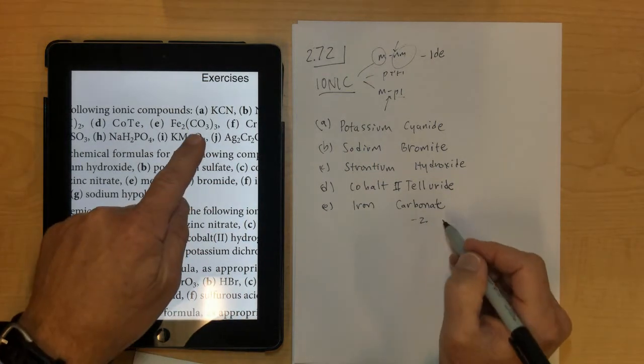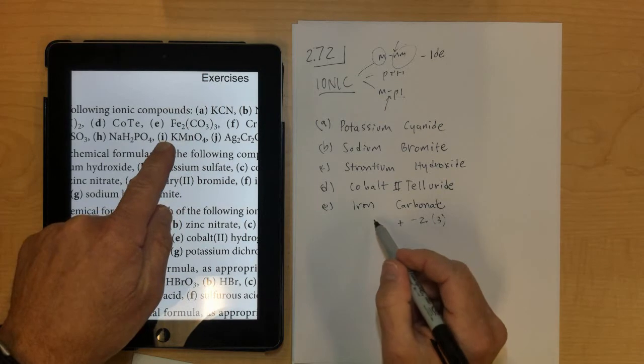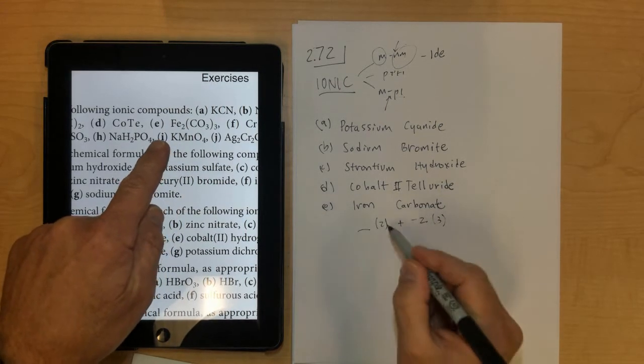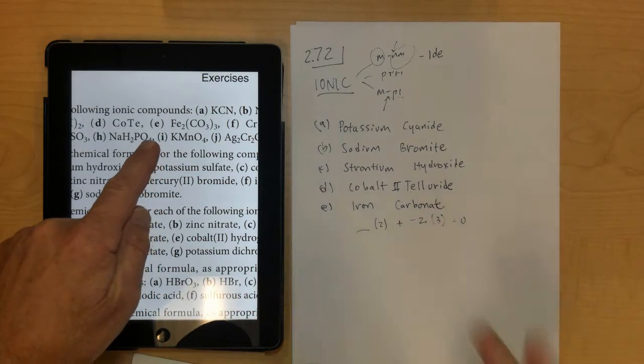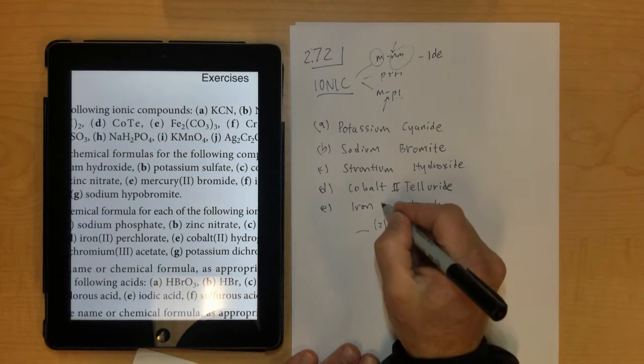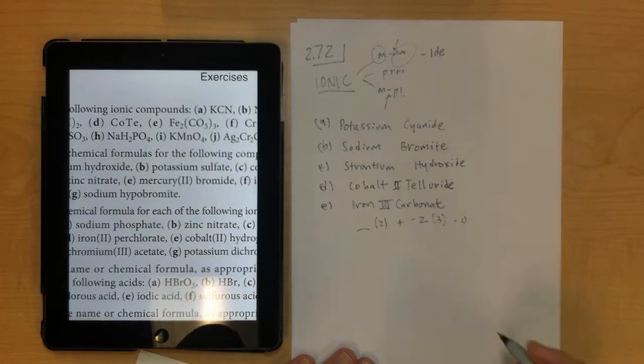You'll notice that there's 3 of those carbonates, and there's 2 of those iron, so something times 2 plus negative 6 has got to equal 0, because remember the charges have to match and balance each other out, so that means iron must be positive 3, so you'd put Roman numeral 3 right there.